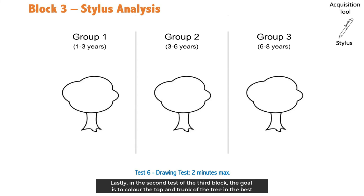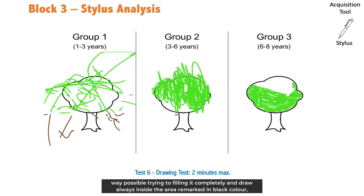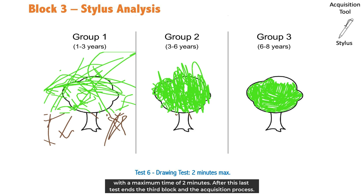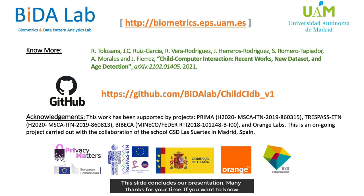Lastly, in the second test of the third block, the goal is to color the top and trunk of the tree in the best way possible, trying to fill it completely and draw always inside the area remarked in black color, with a maximum time of two minutes. After this last test ends the third block and the acquisition process. This slide concludes our presentation. Many thanks for your time. If you want to know more about the topic, please take a look at this reference or visit our public database.